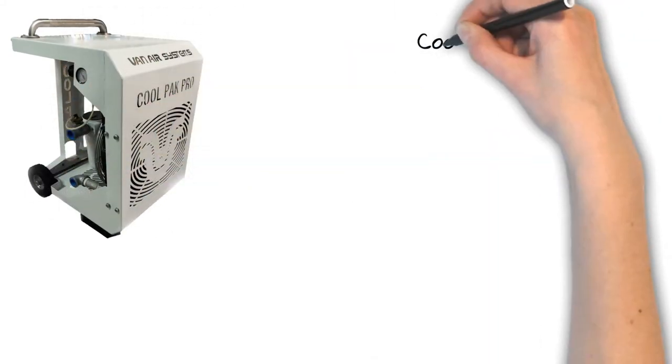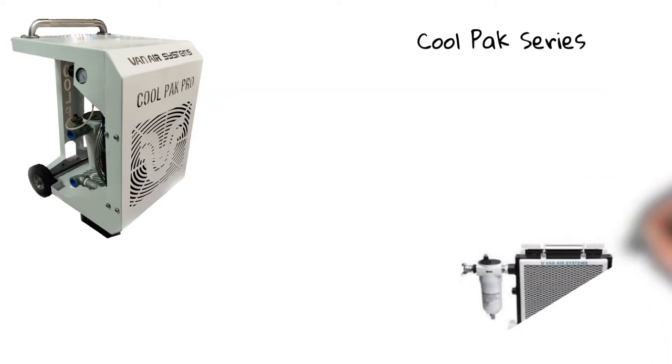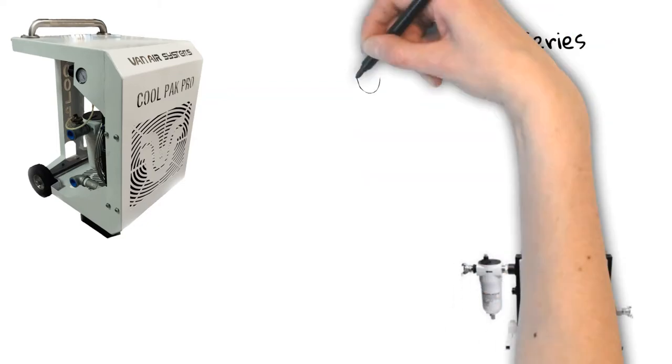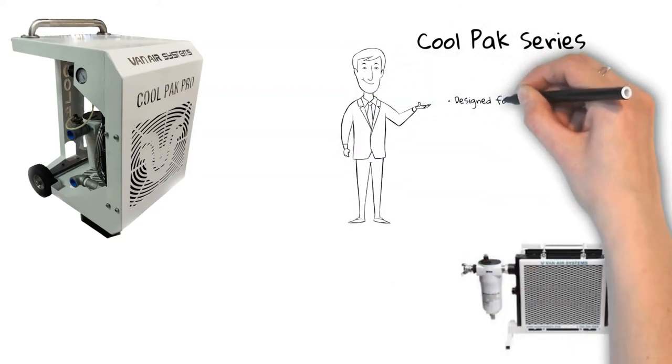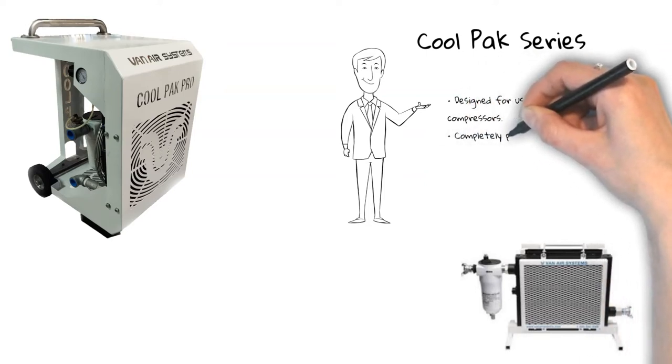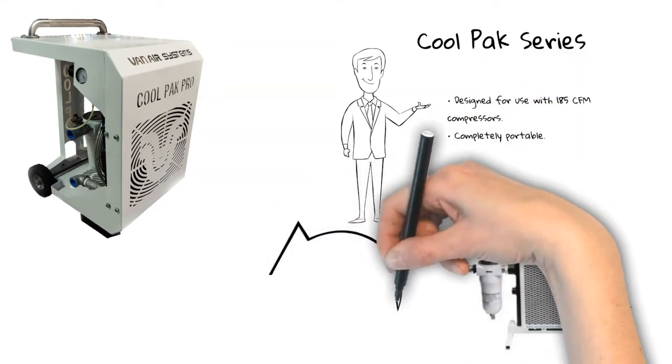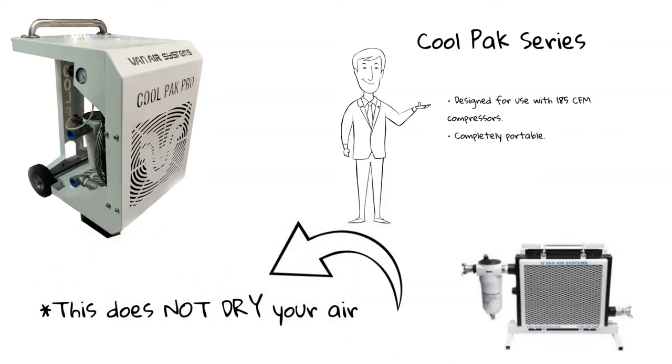Our Cool Pack and Cool Pack Pro are a series of portable after-cooling units. These systems cool the compressed air, which allows moisture to fall out of the compressed air stream. These systems are portable and include an aftercooler, filter, and drain. They are designed for use with a 185 CFM compressor. It is important to remember that this does not dry your air.